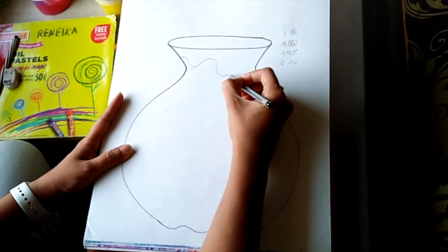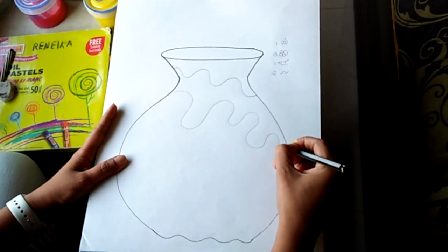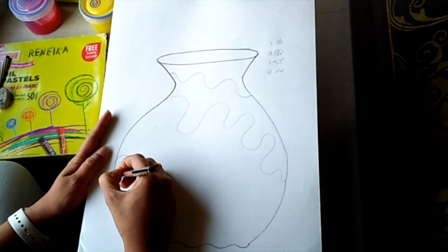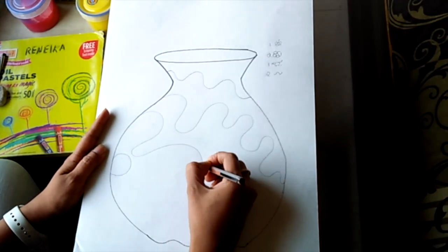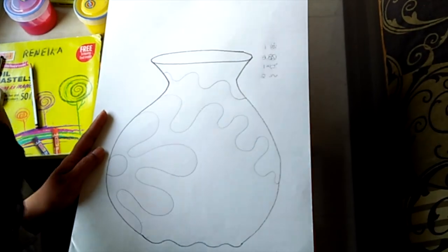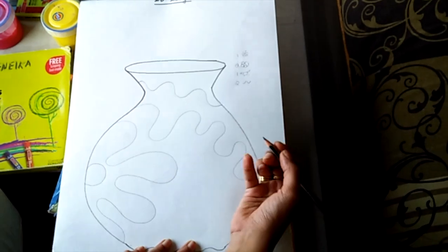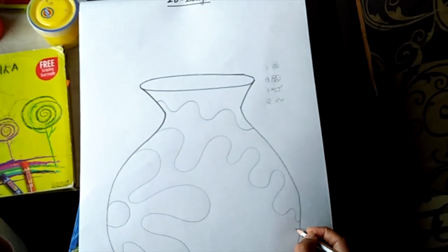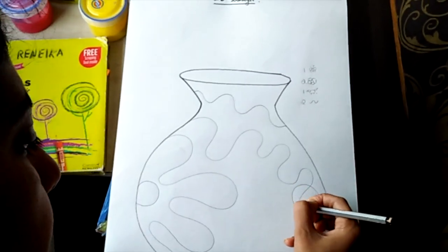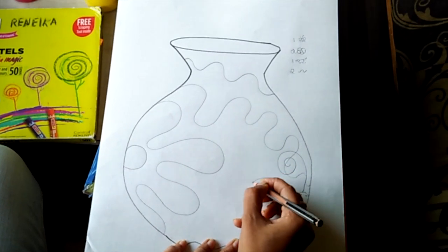So I am just placing the curvy lines like this. They can go anyhow, like I said. Then I am making a flower, which again, I am not making a full flower. You can go with half a flower, you can go with three fourths of a flower. There are no restrictions as I said. After that, I am going to add a butterfly again, just adding half a butterfly like this, just one wing.